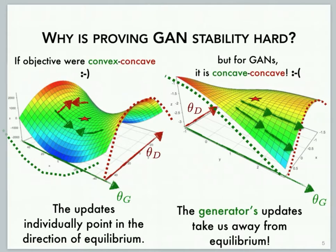What makes it challenging to prove stability is that even for simple linear discriminator and generator networks, the GAN objective is not convex-concave but can be concave-concave. As a result, even when you're very close to equilibrium, the generator updates could take you far away from equilibrium.